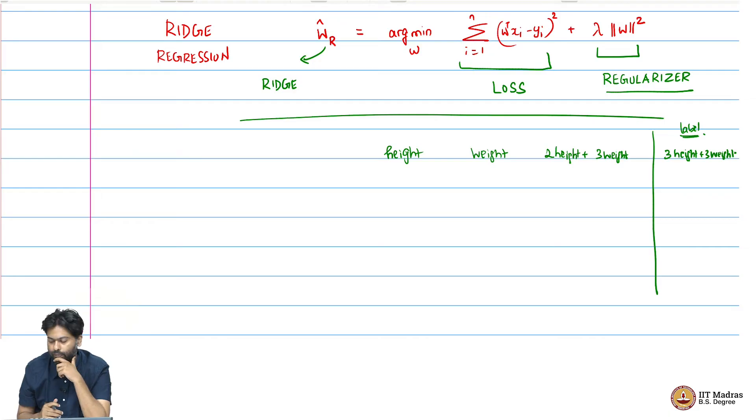One way is to say maybe 3 times height plus 4 times weight. One way to explain this is to put a 1 here, 1 here, and 1 here. These are my weights for height, weight, and the third feature. I can have 1, 1, 1 as my weights and if I add these three things up, I get 3 times height plus 4 times weight which perfectly explains this.